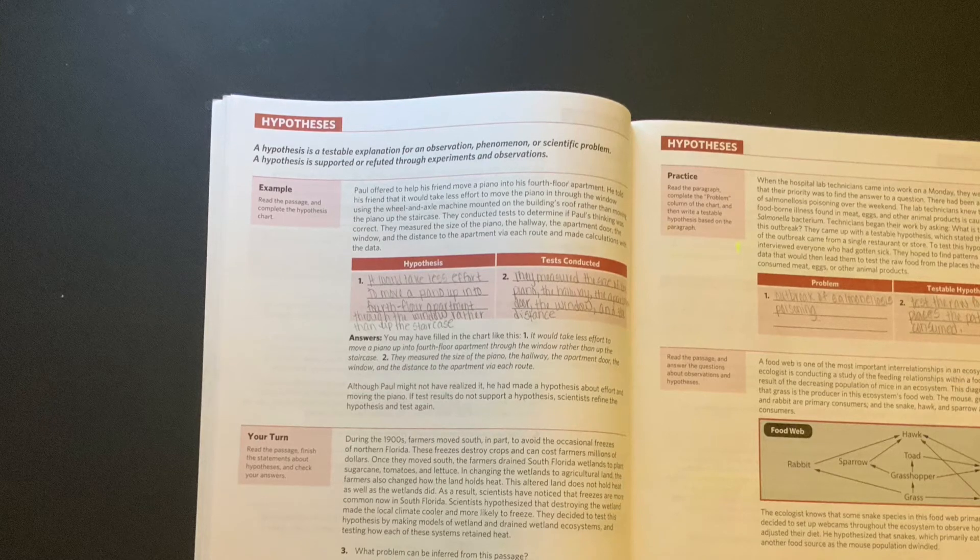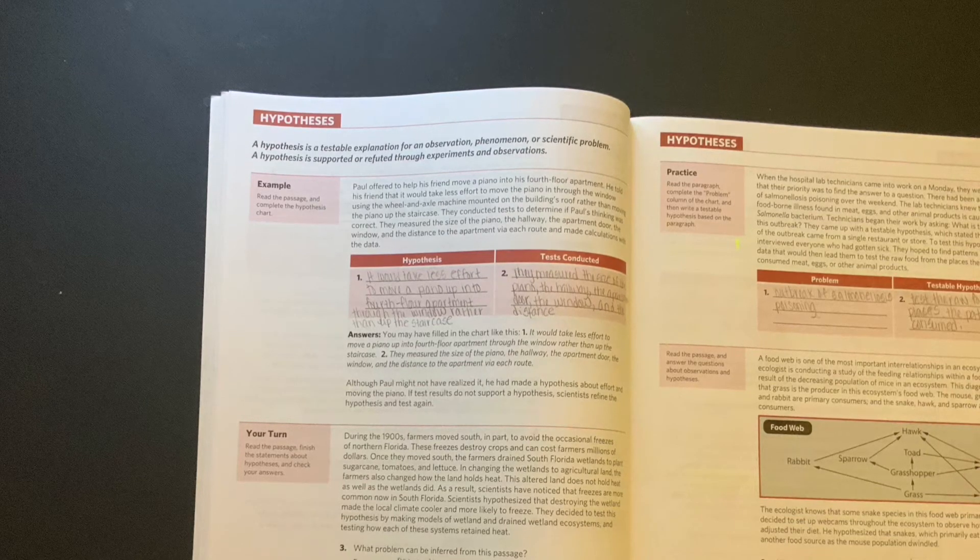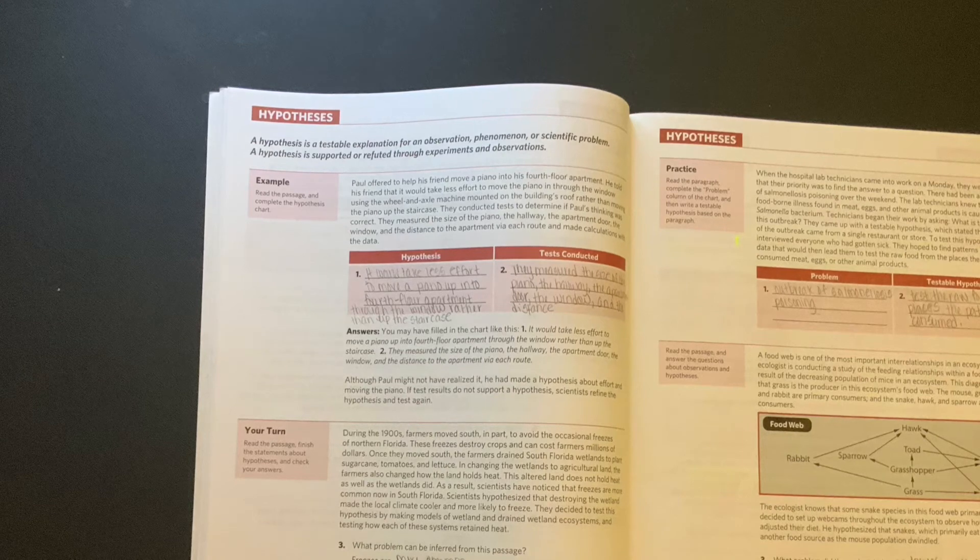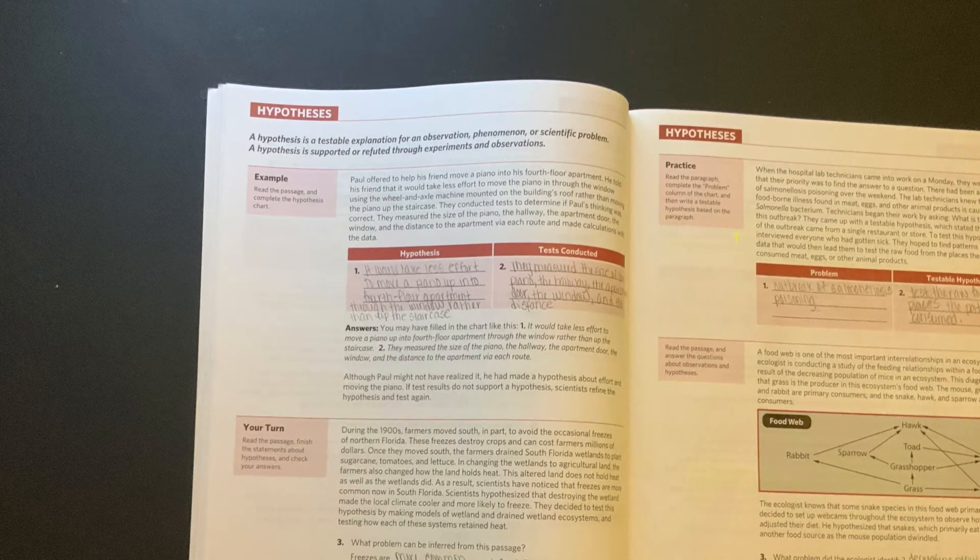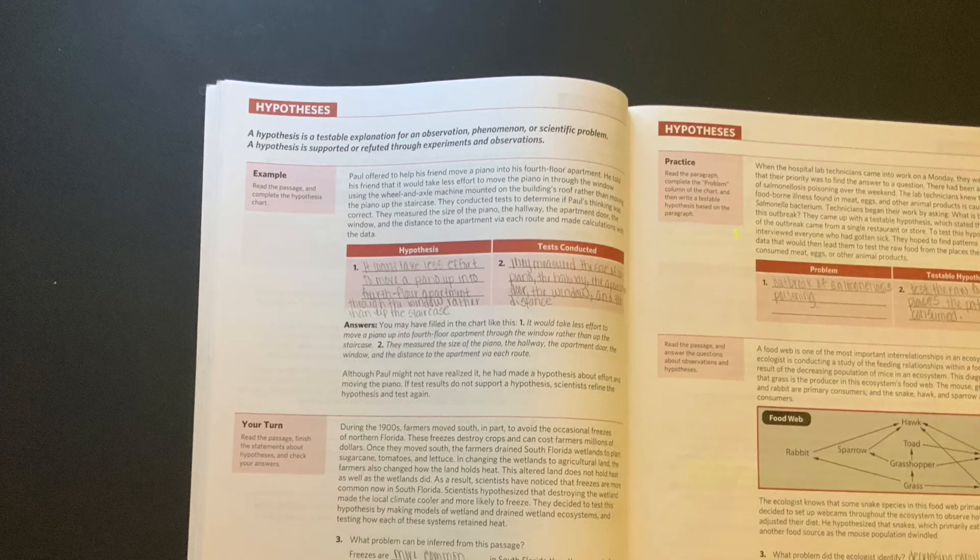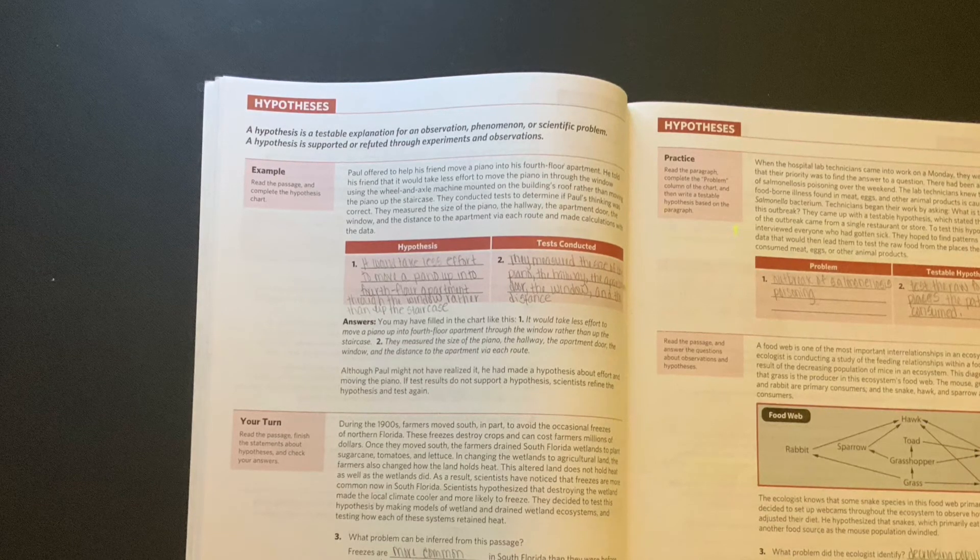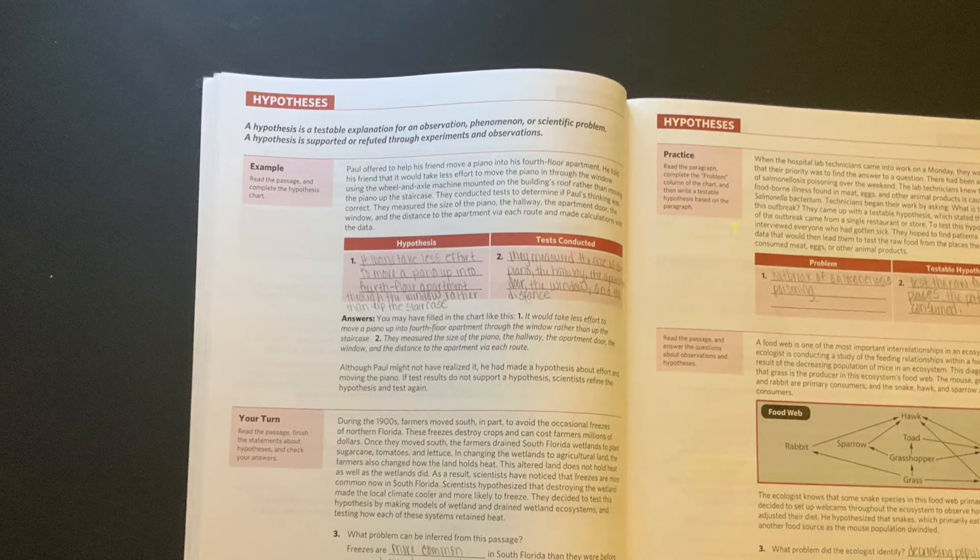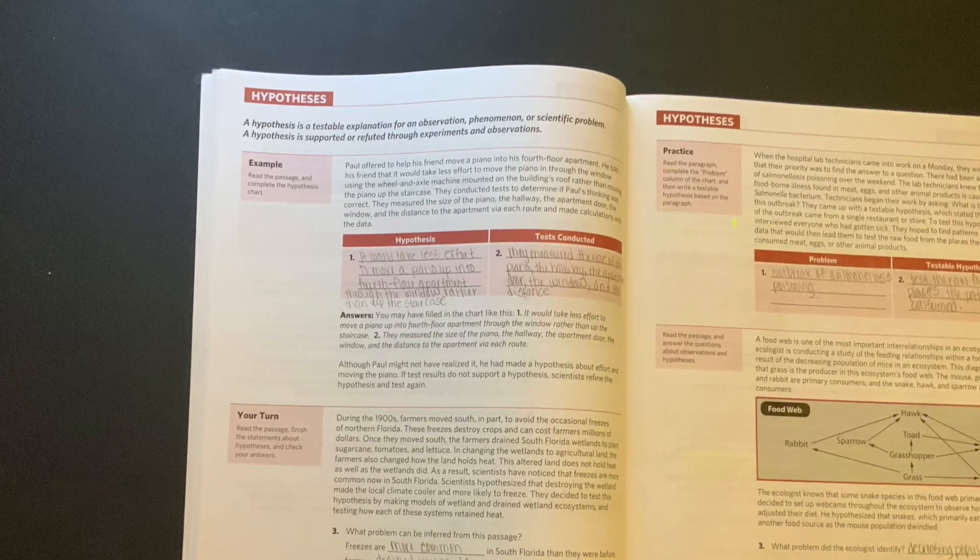Okay, so let's continue. The ecologist knows that some snake species in this food web primarily eat mice. He decided to set up webcams throughout the ecosystem to observe how snakes have adjusted their diets. He hypothesized that snakes which primarily eat mice would find another source as the mouse population dwindles. So what problem did the ecologist identify? He identified the decreasing population of mice, and that is in the last sentence when he says they dwindle, so that means the same thing. What testable hypothesis did the ecologist form? The ecologist formed that snakes which primarily eat mice will find another food source as the mouse population dwindles.